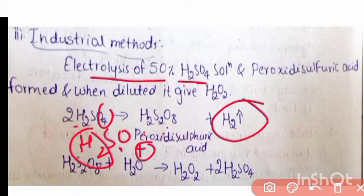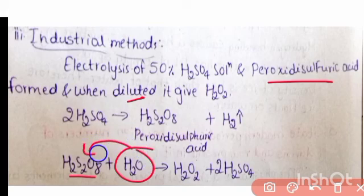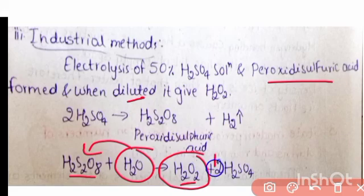In the next step, peroxydisulfuric acid is diluted by adding water. This produces our main product H2O2 (hydrogen peroxide), along with sulfuric acid.